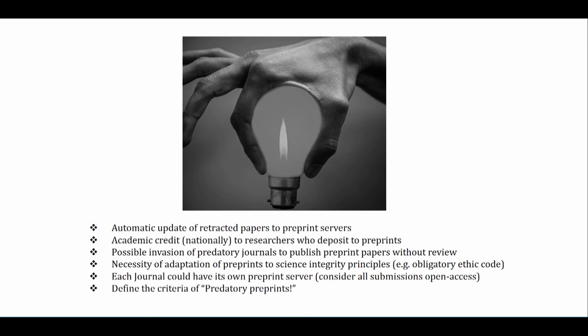Additionally, each journal could have its own preprint server, in which case all submissions could be open access before the peer review process. The tenth possibility for the future of preprints is defining the criteria for predatory preprints. Just as there is an exact definition of predatory journals today, scientists in the field of publication will try to define specific and definite criteria for predatory preprints as well.